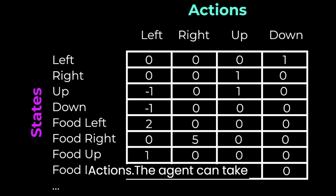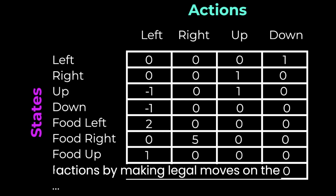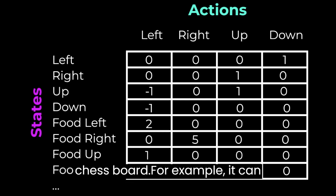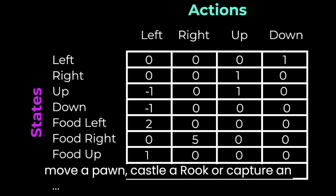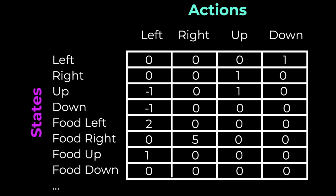The agent can take actions by making legal moves on the chessboard. For example, it can move a pawn, castle a rook, or capture an opponent's piece.